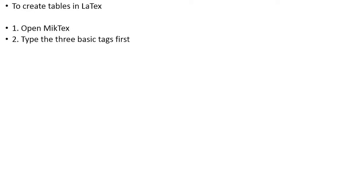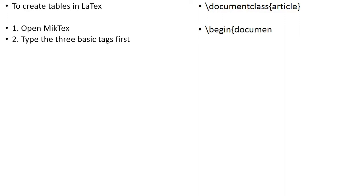To create tables in LaTeX, first of all open your editor. Type the three basic tags first. They are the \documentclass, and inside the curly braces you need to write something like article, book, thesis, etc. The second basic tag is \begin{document} and the last basic tag is \end{document}. These are the three basic tags that you always need to type in your LaTeX document.